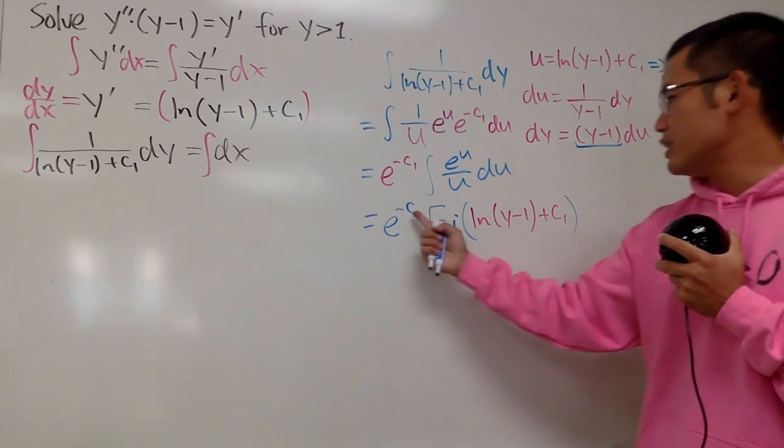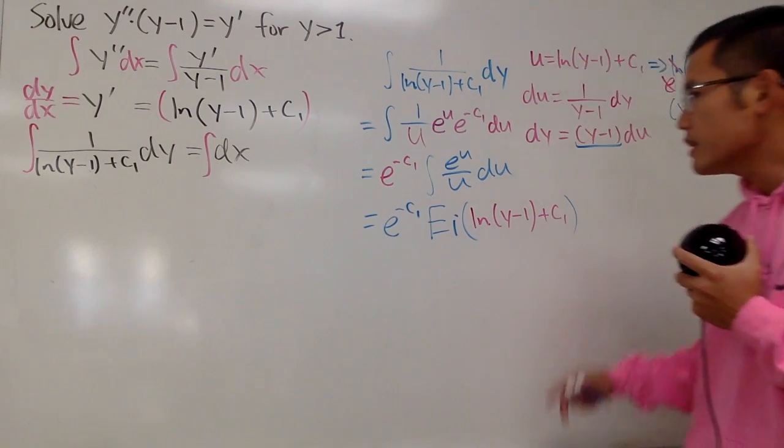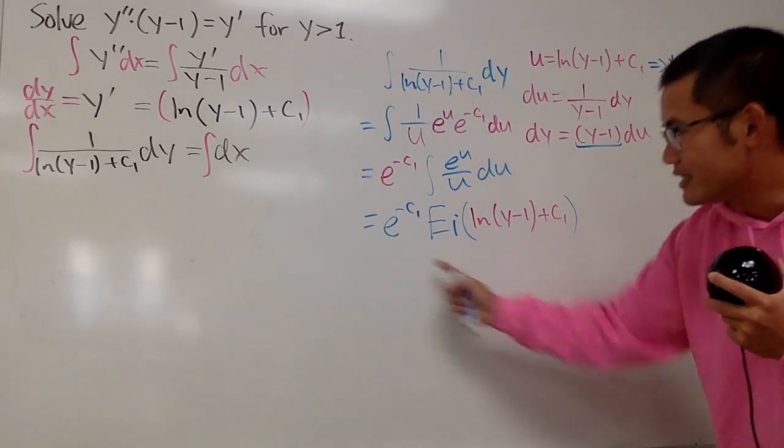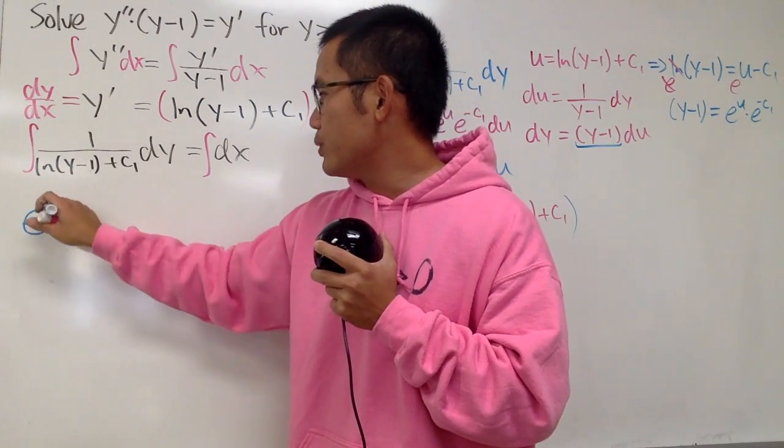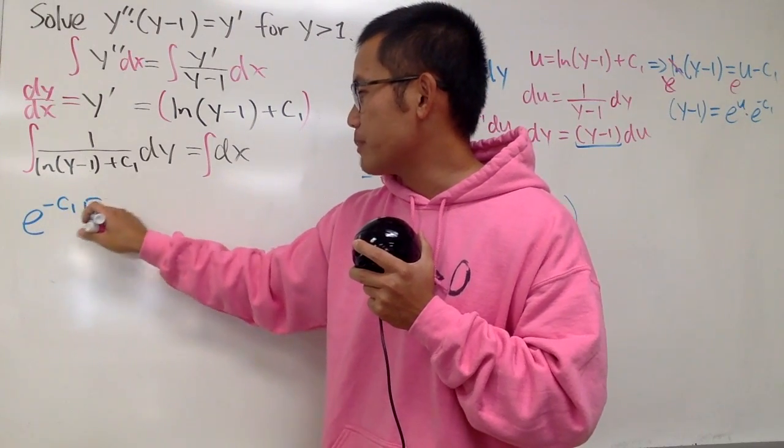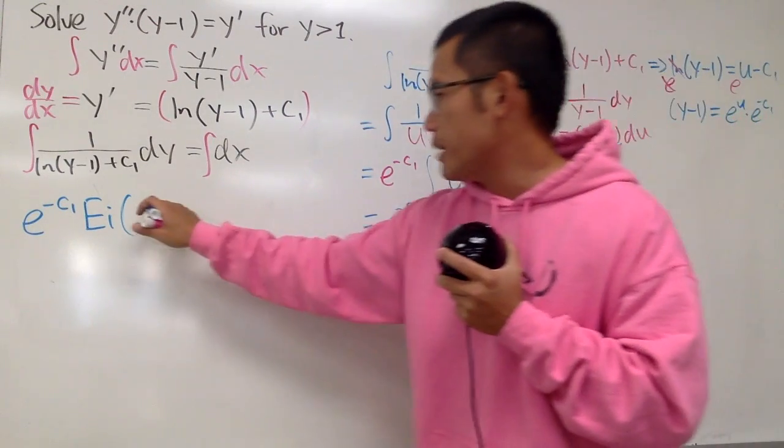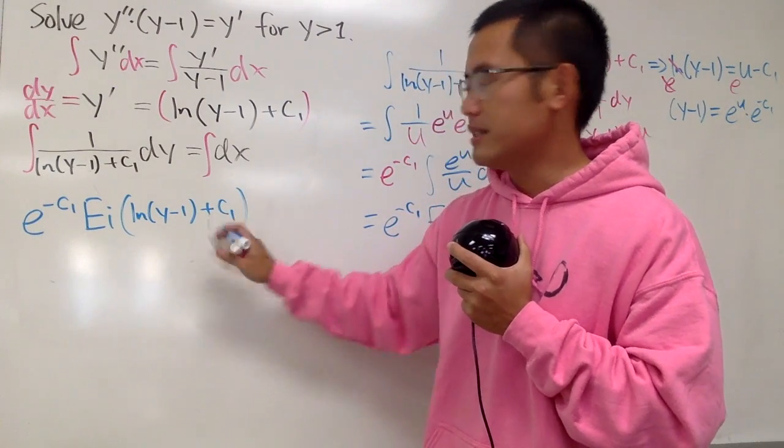And see, we have the c1, c1 right here. Do not write the whole thing as the c2 though. Okay, so, when we integrate the left-hand side, we get this. So, of course, we just have to put that down right here. We get e to the negative c1 times the exponential integral function of this whole thing inside, namely ln of y minus 1 plus c1 like this.